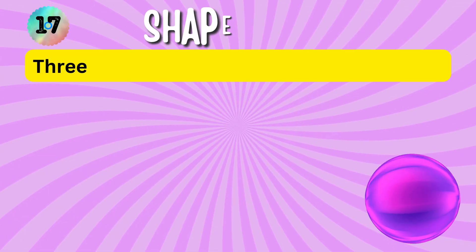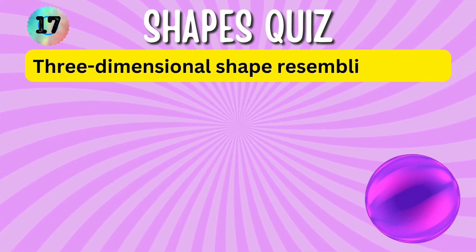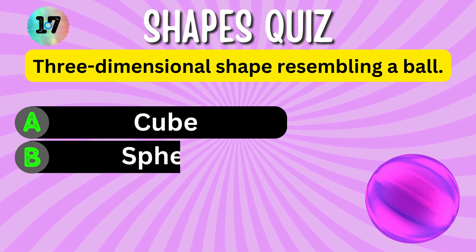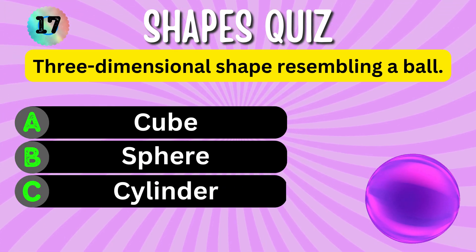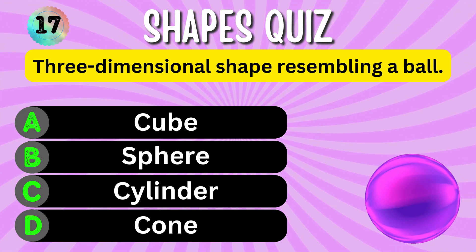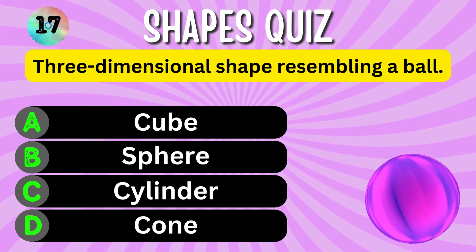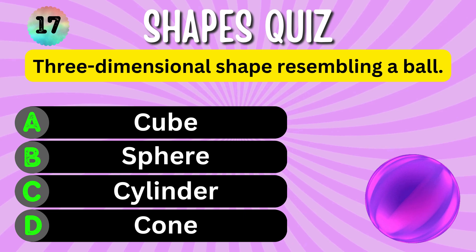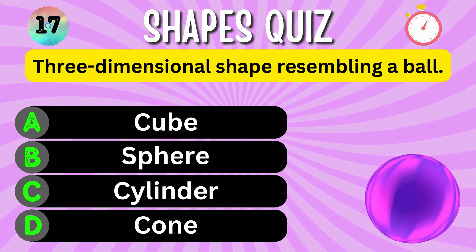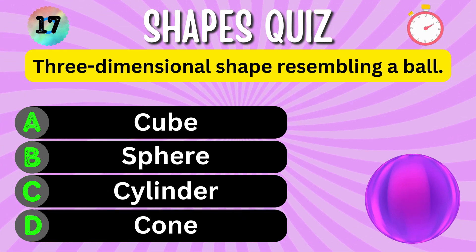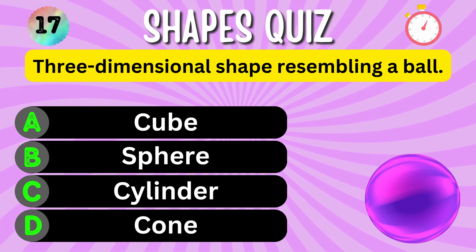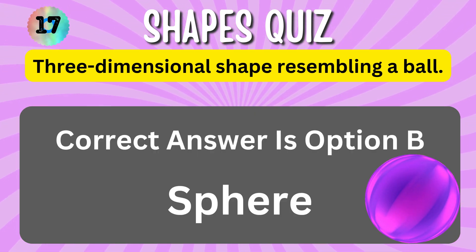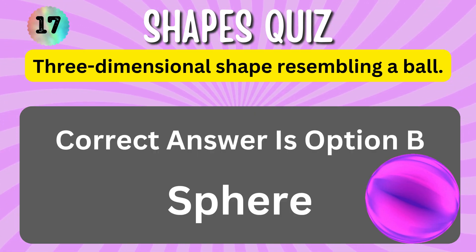A three-dimensional shape resembling a ball. Option A. Option B. Option C. Option D. You have 5 seconds to choose the correct answer. Your time starts now. The correct answer is Option B, Sphere.